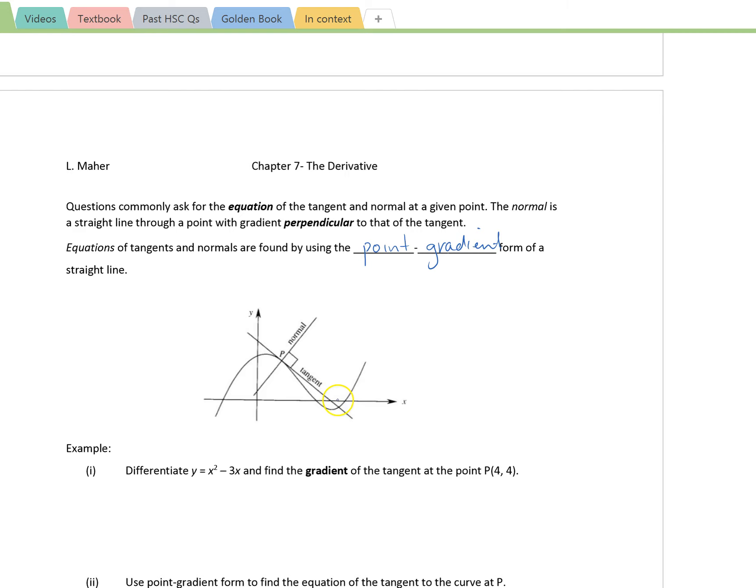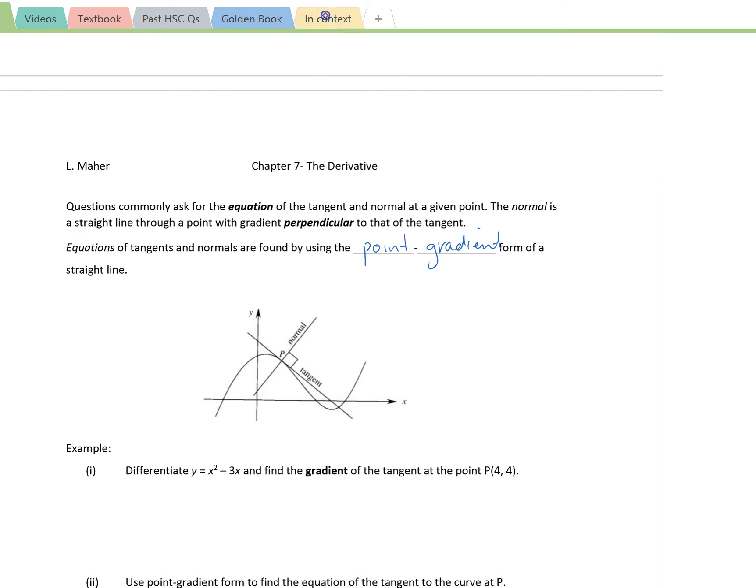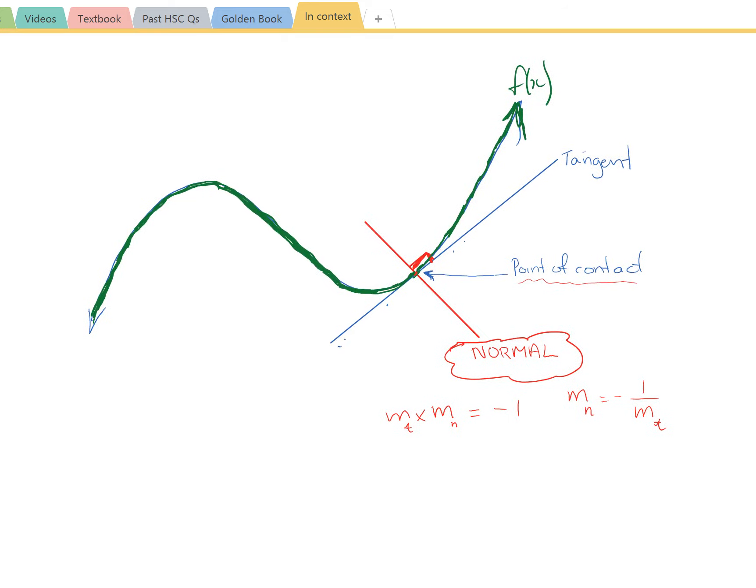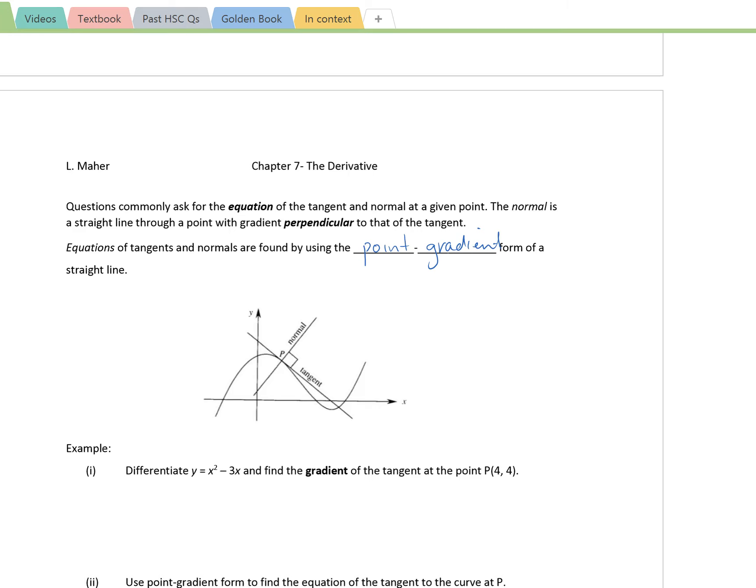For those of you that didn't see the bottom of my in-context page, which I think I talked about on a different video, I've tried to demonstrate what a normal is. It came from this diagram where the tangent is drawn here at P, and the normal is demonstrated as being perpendicular to the tangent and going through the point P.